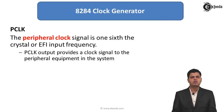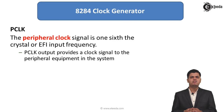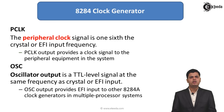The next pin is PCLK, the peripheral clock. The peripheral clock signal is one sixth of the crystal or EFI frequency, whereas the CLK output is one third. The PCLK is used to provide the clock to the different peripherals connected in the system. There can be a number of different ICs connected in the system, and PCLK provides them the clock frequency at one sixth of the input frequency.